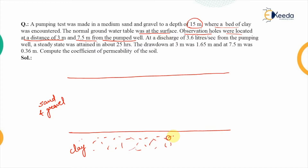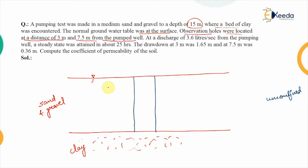This clay layer ensures that water is not going through it. Since the normal groundwater table is at the surface, this represents the conditions of an unconfined aquifer — the water can escape from one side but not from the other. This is the pumping well, made up to the depth of 15 meters, which is the depth of the medium.